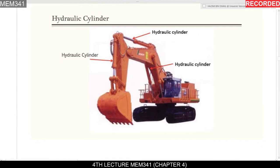An application of hydraulic cylinders can be seen in an excavator (backhoe). The excavator has hydraulic cylinders on its arm and connected sections. These cylinders perform the work of digging out sand or soil, with the final actuator being the hydraulic cylinder at the end of the arm.